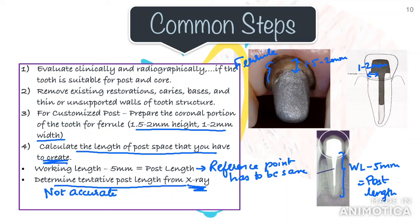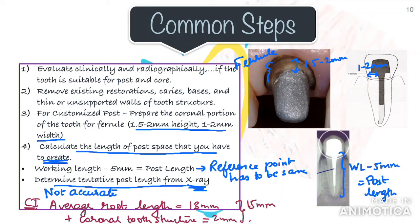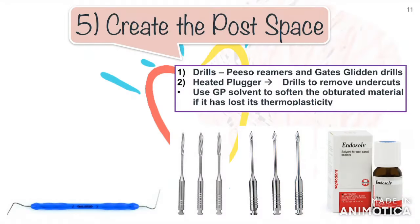To be safe, you can consider the average length of a root — for example, for a central incisor the average root length is 13 mm. If you have 2 to 3 mm of coronal portion, you can consider your working length to be 15 mm and your post length will be 15 minus 5, that is 10 mm. It is okay if it is short — you can always take an RVG after creating the post space and judge if you need to increase the length. But if you over-prepare, you cannot reverse that, so it's better to be safe than sorry.